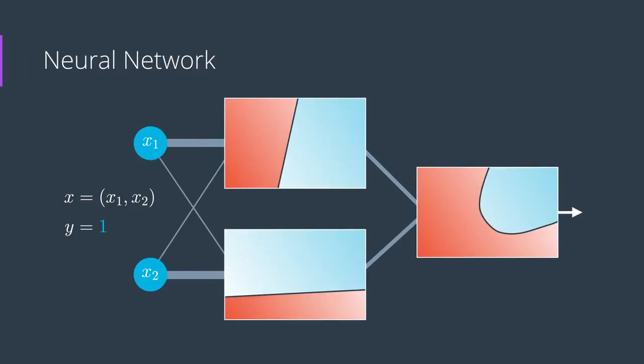Now if we have a more complicated neural network, then the process is the same. Here we have thick edges corresponding to large weights and thin edges corresponding to small weights. And the neural network plots the point in the top graph and also in the bottom graph.